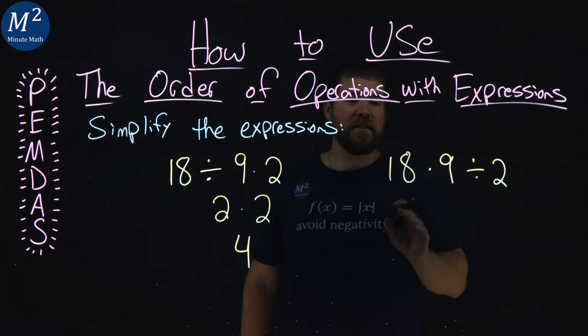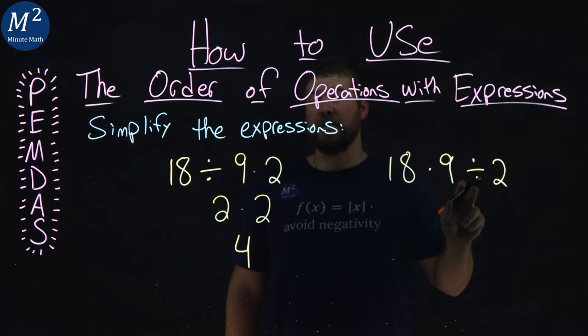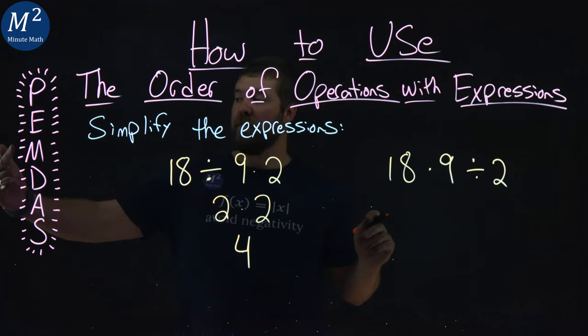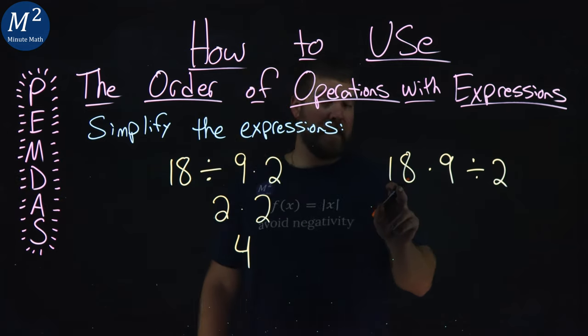The right one here, same idea, we have multiplication and division. Multiplication and division are the same class, and so we read left to right.